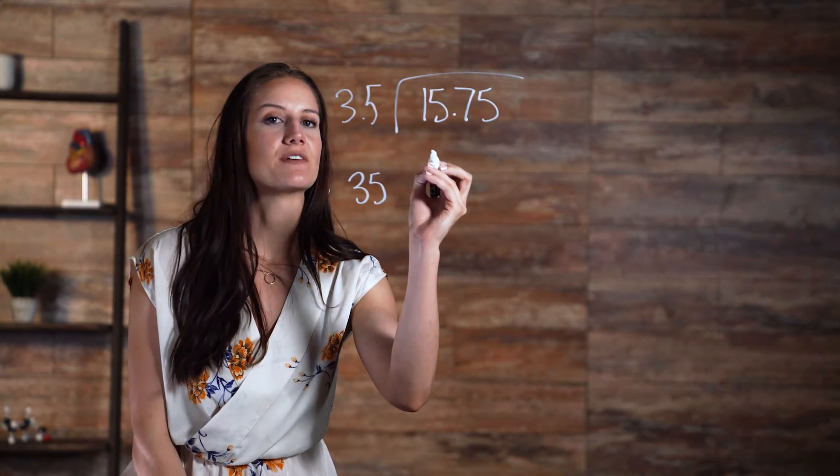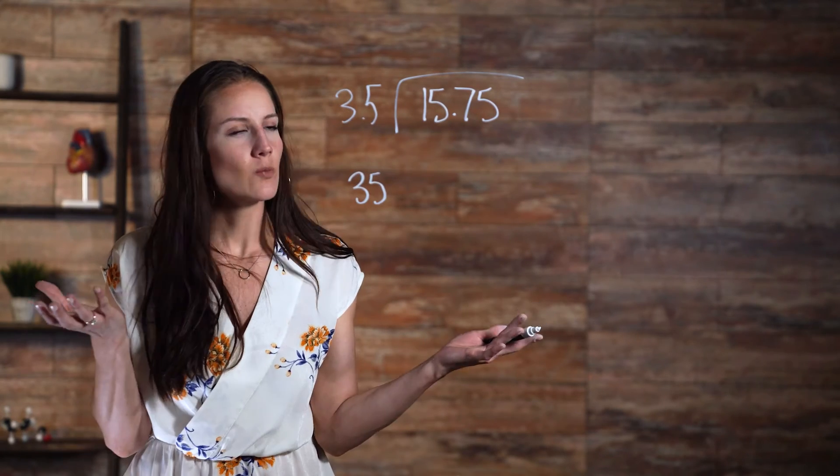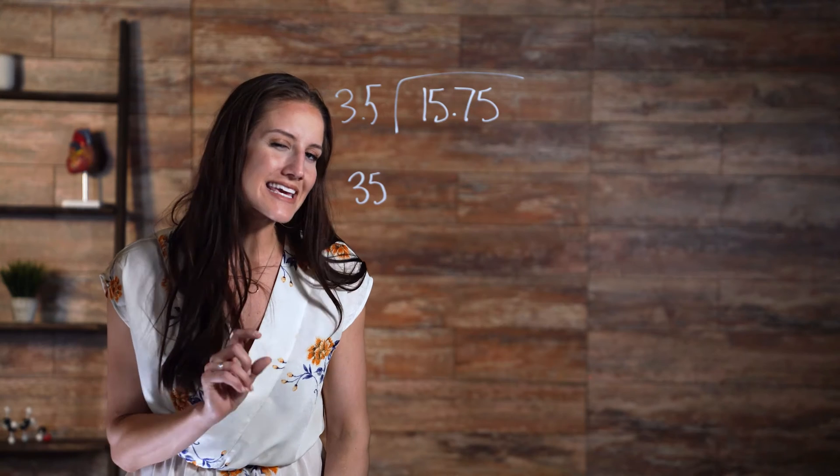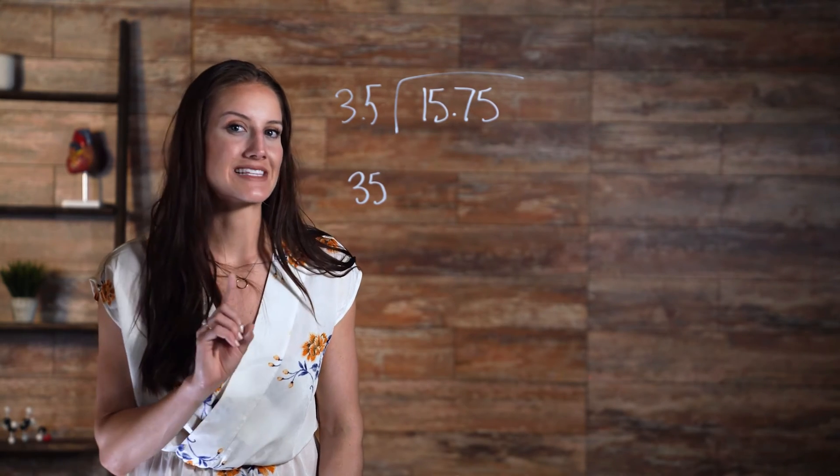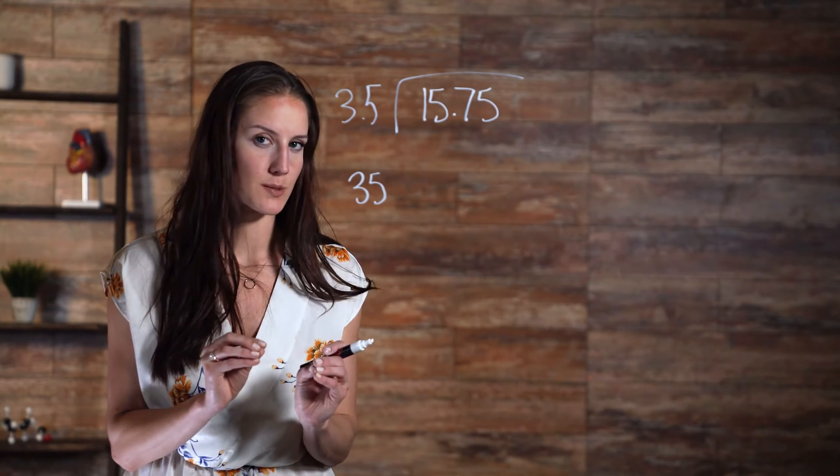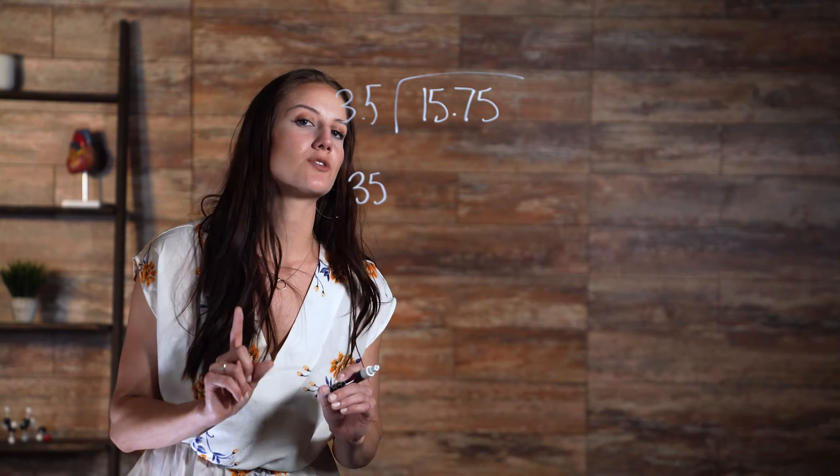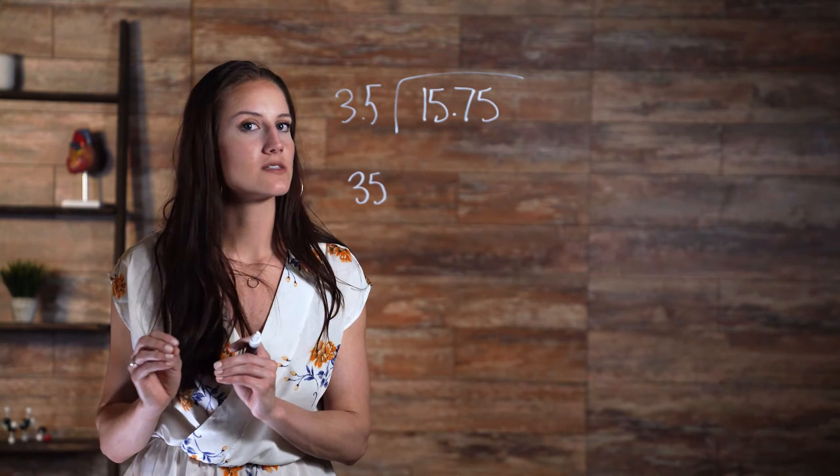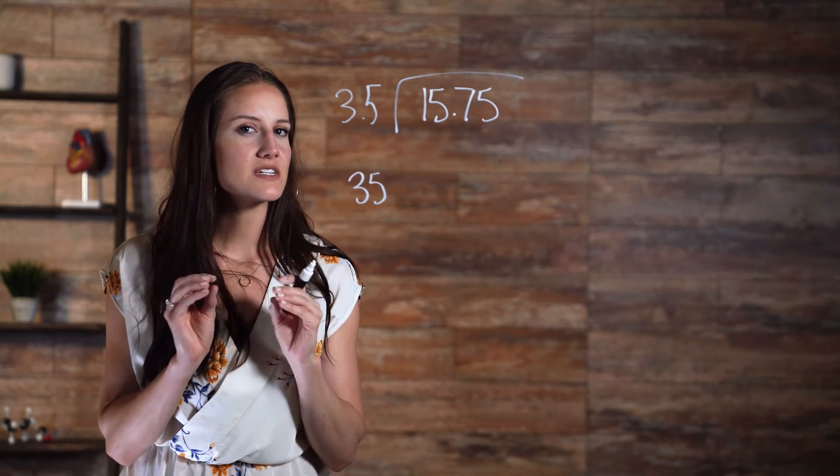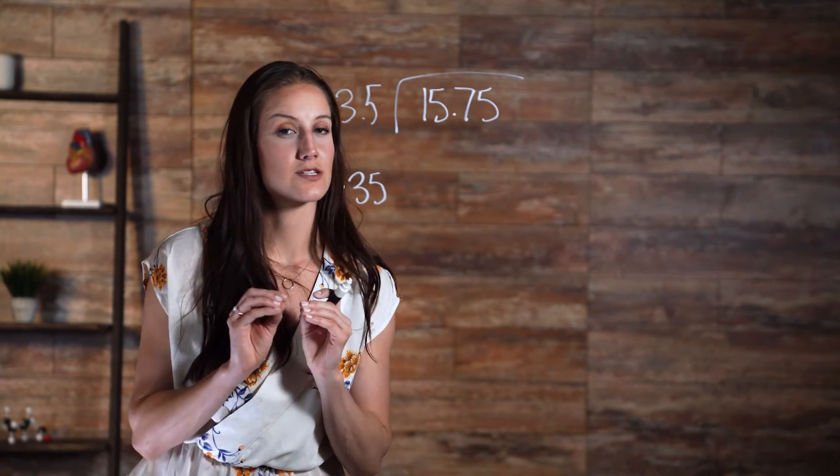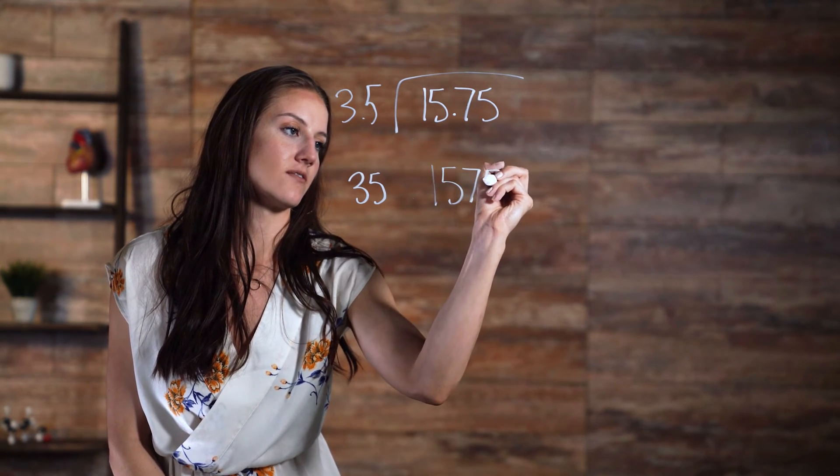That would give us 157.5, which is still not a whole number. So then what do we do in this instance? Remember, a key rule in dividing numbers with decimals: you need to do the same thing to both numbers in the expression. To make 15.75 a whole number, we need to multiply it by 10 twice, or you could say we need to multiply it by 100. That, in effect, moves the decimal place over two places to the right, giving us 1575.